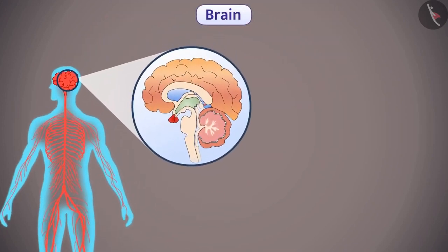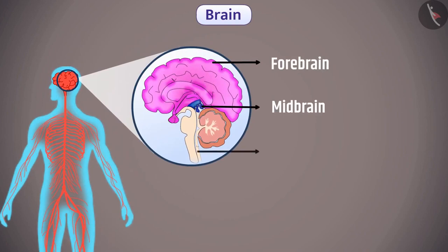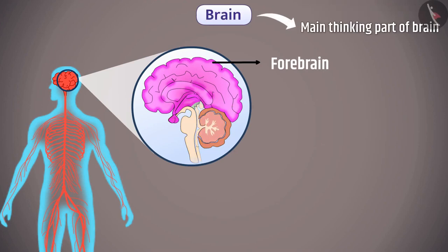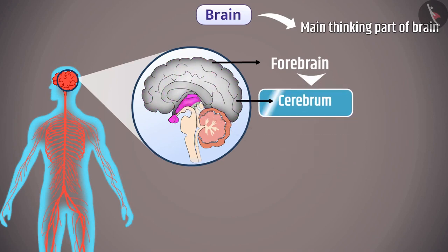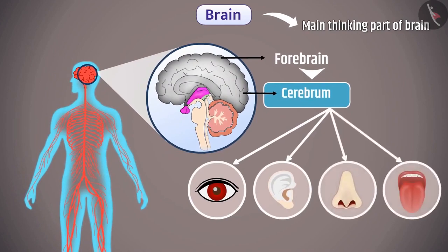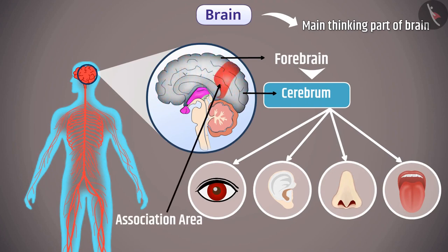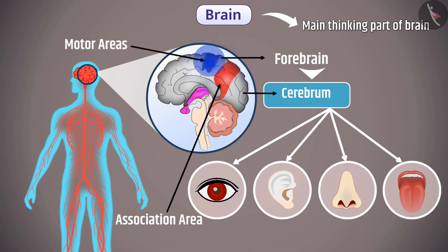There are three parts of the brain: forebrain, midbrain, and hindbrain. The forebrain is the major thinking part, made up of the cerebrum, hypothalamus, and thalamus. The cerebrum controls our voluntary actions and has different areas for different receptors. Associative areas in the cerebrum interpret sensory information and information already stored in the brain to make decisions, which are then conveyed to the motor areas.